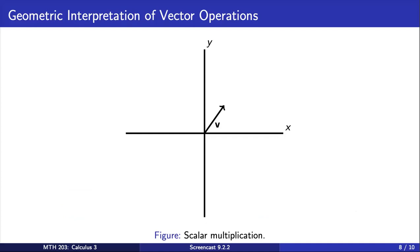Next, we will visualize scalar multiplication of a vector. Scalar multiplication just means multiplying a vector by a real number, also called a scalar. As the name suggests, this will scale the vector. Pictured here, we have the vector v.